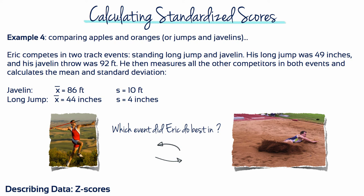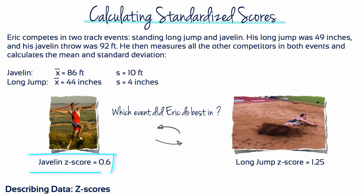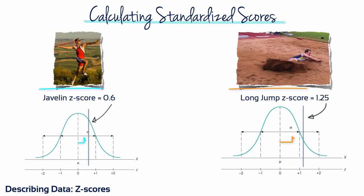So which event did Eric do best in? Standardizing the jumping and throwing variables for these two different sporting events allows us to make a meaningful comparison between the two. Eric's javelin result, standardized into a z-score, is 0.6, while his long jump z-score is 1.25. 1.25 is further away from the mean than 0.6. It shows us that Eric was more exceptional in the long jump event than in the javelin.